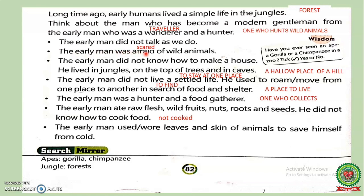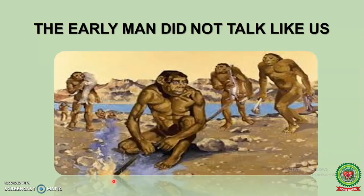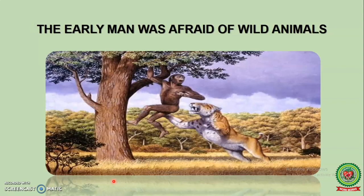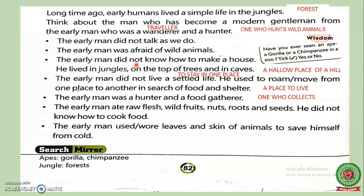The early man was afraid of wild animals. Underline 'afraid' — write its meaning: 'scared.' The early man could not speak like us. He was afraid of wild animals. The early man did not know how to make a house. He lived in jungles, on the top of trees, and in caves.